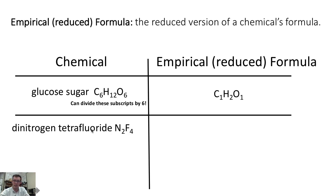Another example, if we had dinitrogen tetrafluoride, we would notice that each of these subscripts is divisible by 2. And so the empirical formula would be 1 nitrogen for every 2 fluorines.